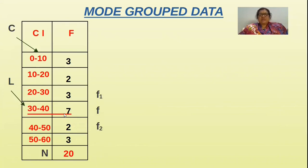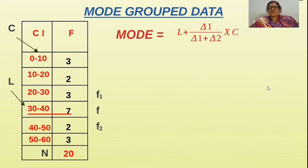Here you have to note down for mode. I will explain very easy method. Here you have to represent the highest frequency as F, and the before one previous one you have to take it as F1. Now we will write the formula. This is very simple and very easy formula. L plus delta 1 by delta 1 plus delta 2 into C. This is very easy method.